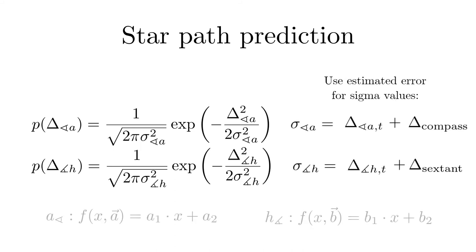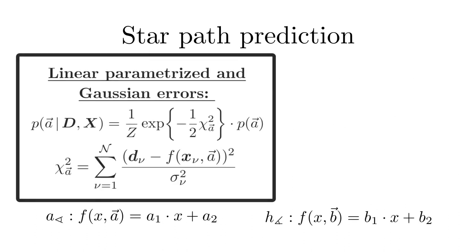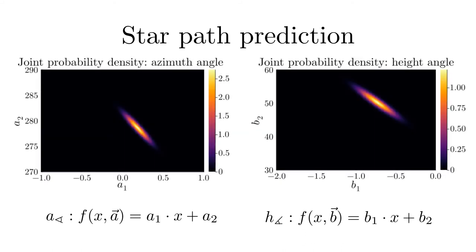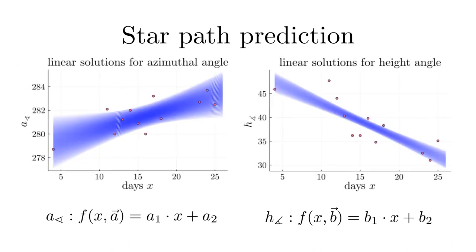Next, we assume a linear model for which we can apply the formulas we just derived. Following the Bayesian regression steps, we end up with a joint probability density for the linear parameters and we can use them to derive a prediction for the desired angles.